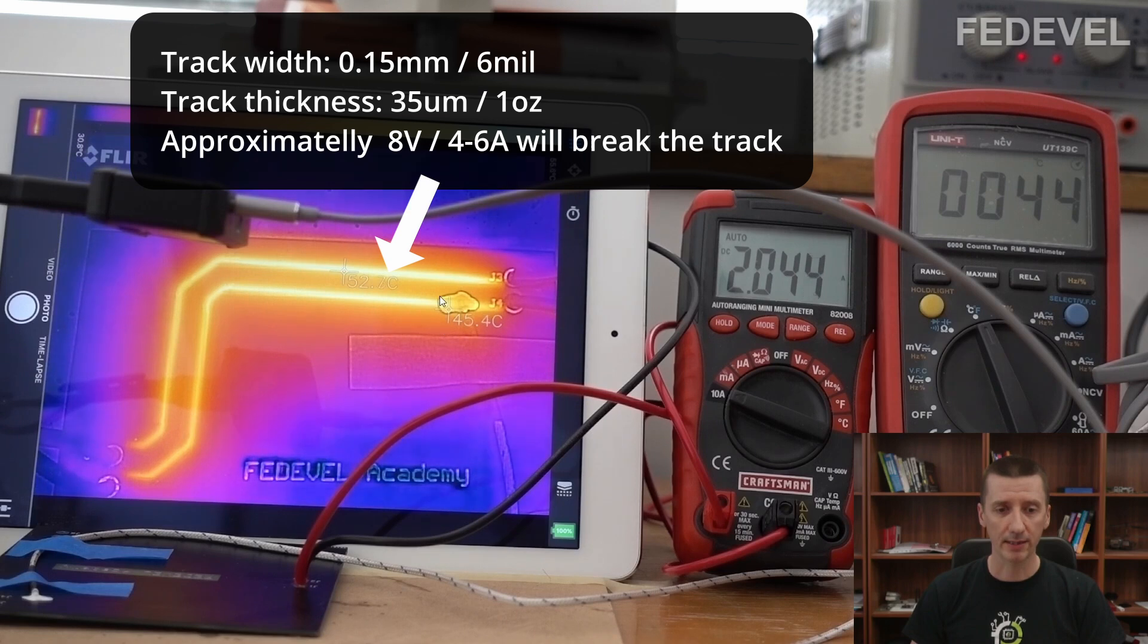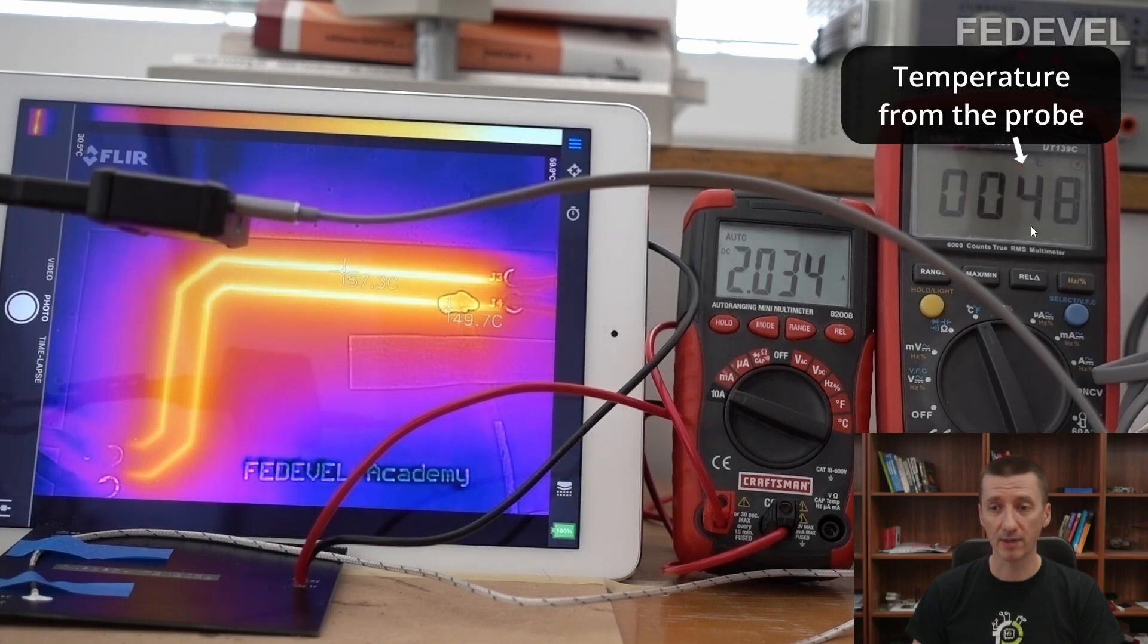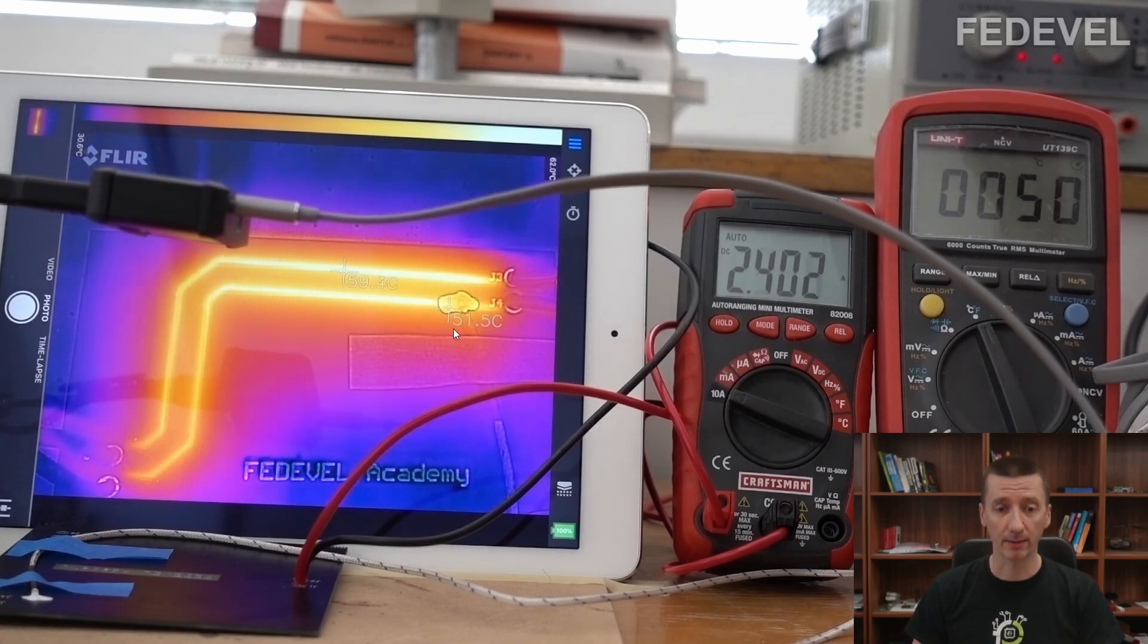Notice this one is a little bit lower because the probe is taking some of the heat away. But notice the numbers. The number here on this DVM is almost exactly same as this one which is here.